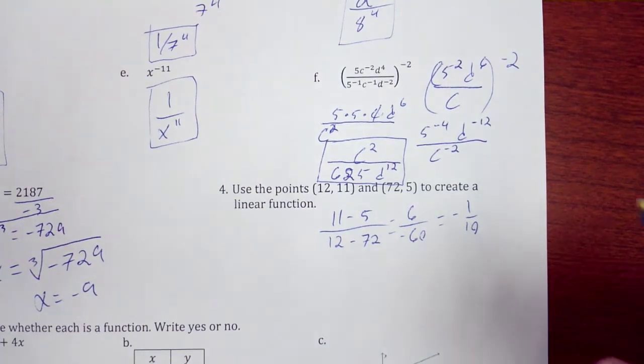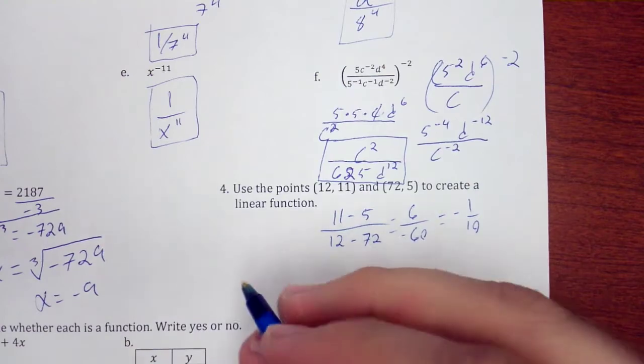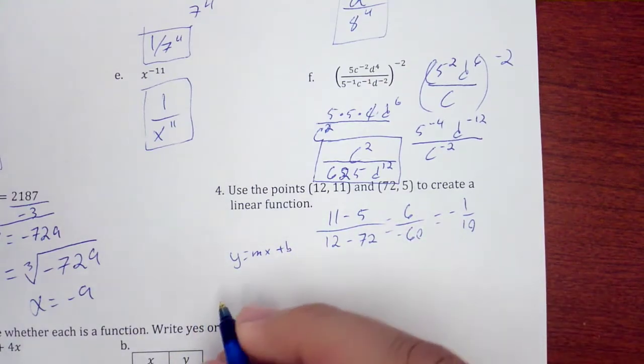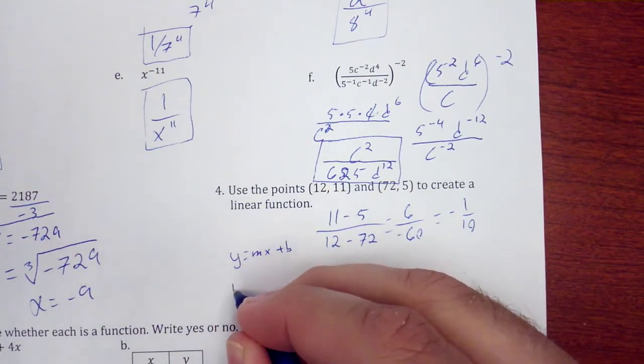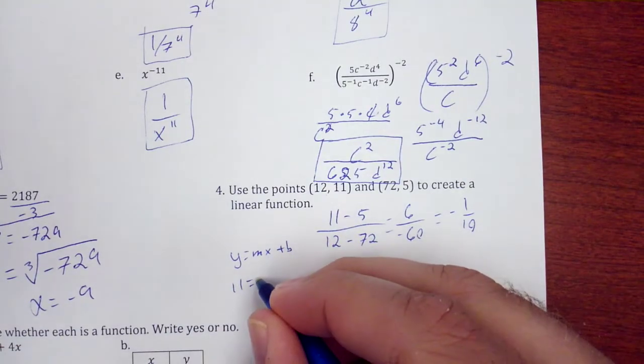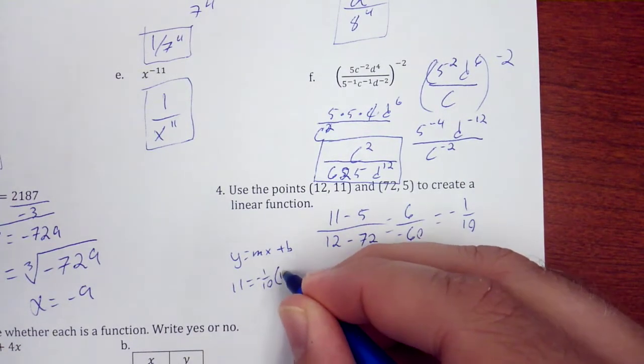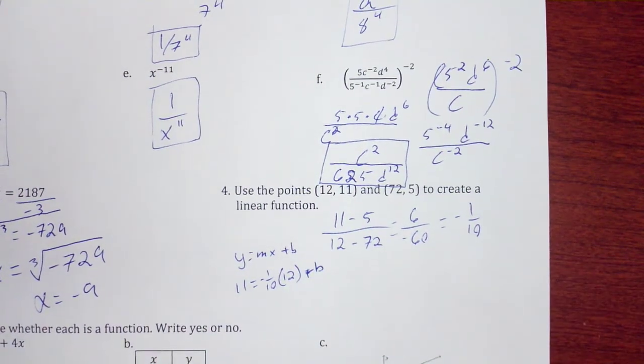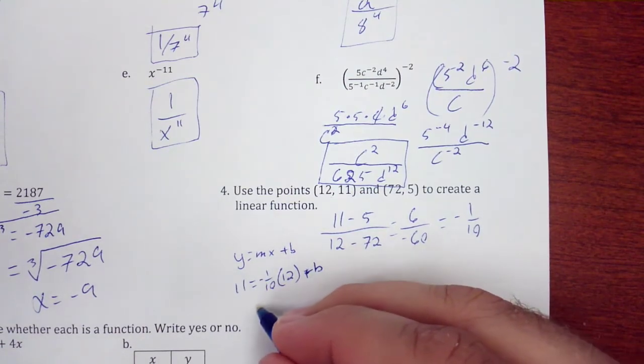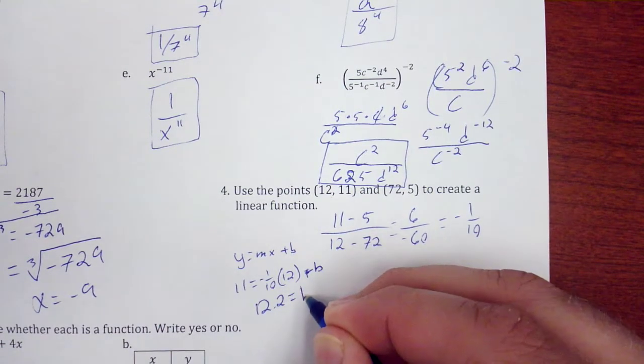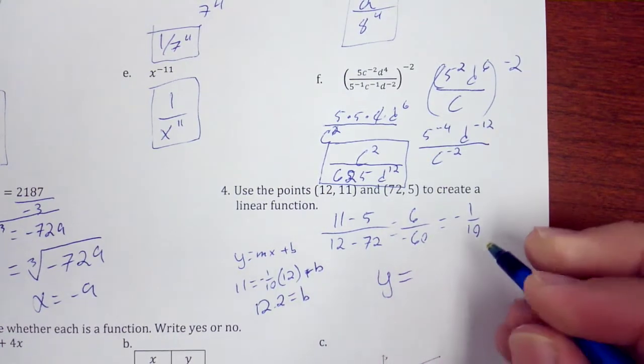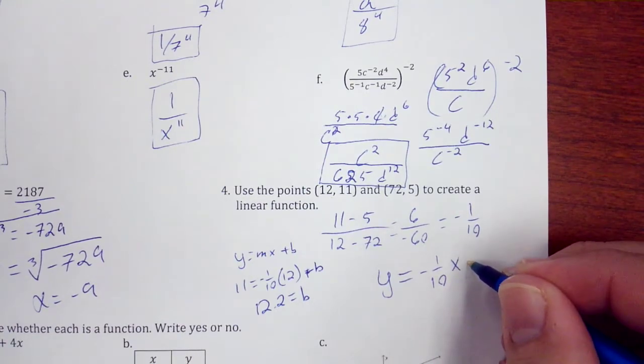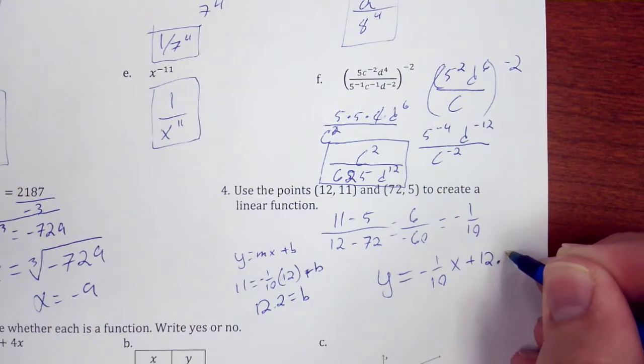Okay, I need to go back in and substitute one of these in for y and x. So y equals mx plus b. I'm going to use this one. So my y value is 11, negative 1 over 10 times 12 plus b. And after I solve that, I'm going to get 12.2 is equal to b. And then I can write my equation y equals negative 1 over 10 times x plus 12.2.